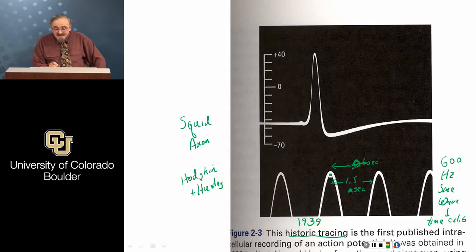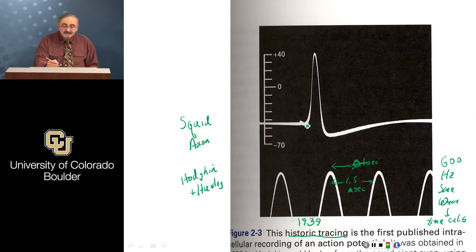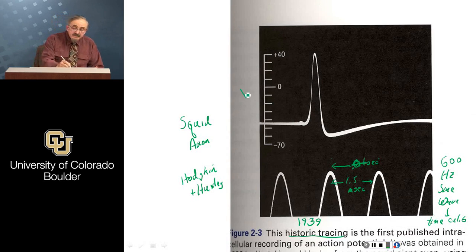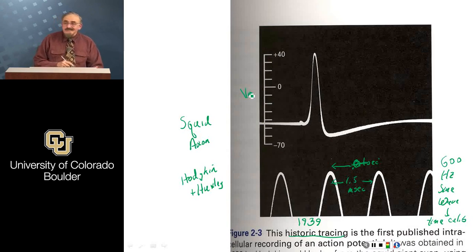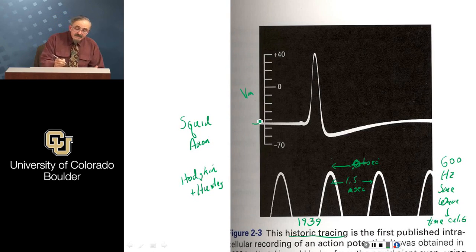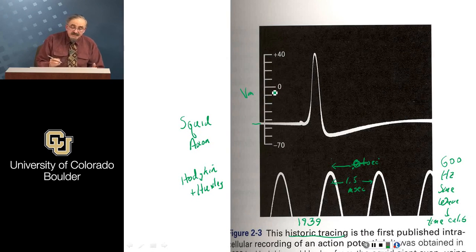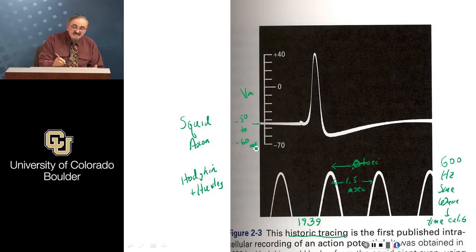Skipping the details, this is a way to calibrate time so you have a signal in both time and voltage. This is the transmembrane potential. Interestingly, even when the cell is not doing anything, the potential across the membrane is not zero — it's something on the order of minus 50 to minus 60 millivolts. That's called the resting potential, sometimes denoted as V sub 0.